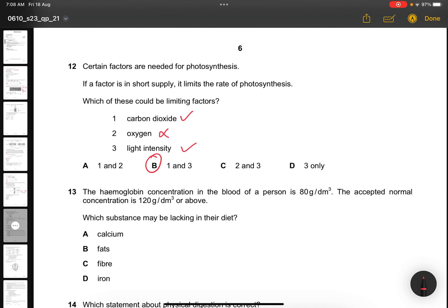Question 13. The hemoglobin concentration in the blood of a person is 80 gram per dm3. The accepted normal concentration is 120 grams per dm3 or above. Which substance may be lacking in their diet? The answer will be D, because iron produces hemoglobin. Calcium is for growth and stronger bones, fats for insulation, and fiber is for preventing constipation.